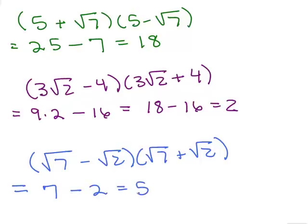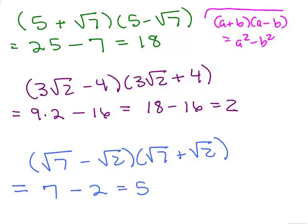What was special about each of these multiplications? They were all in the form (a + b)(a − b), which equals a squared minus b squared. When any of those terms had a square root, squaring it got rid of the square root. That's what happened in all three problems, and you ended up with a rational number — no square roots at all.